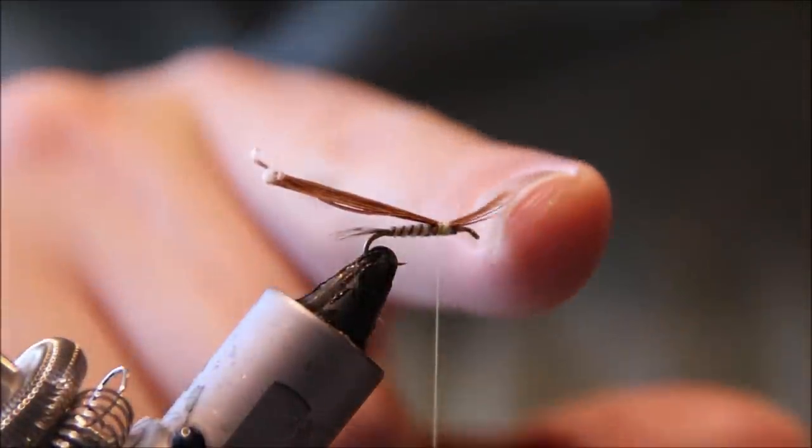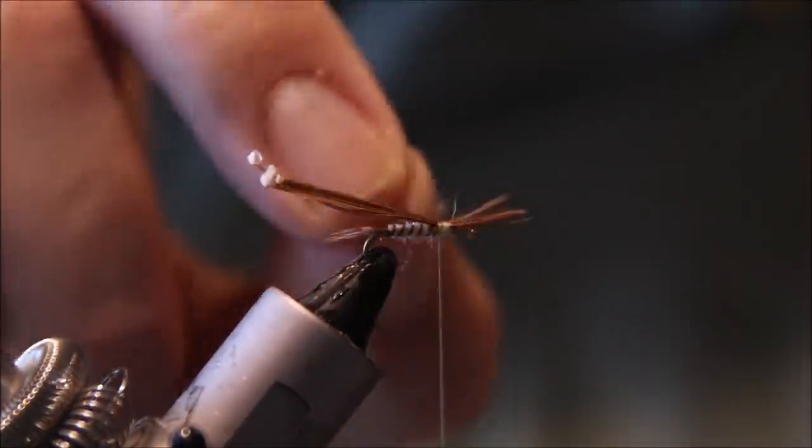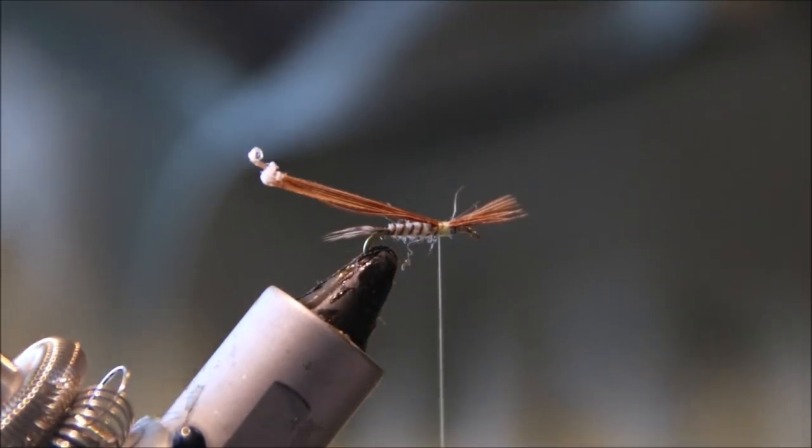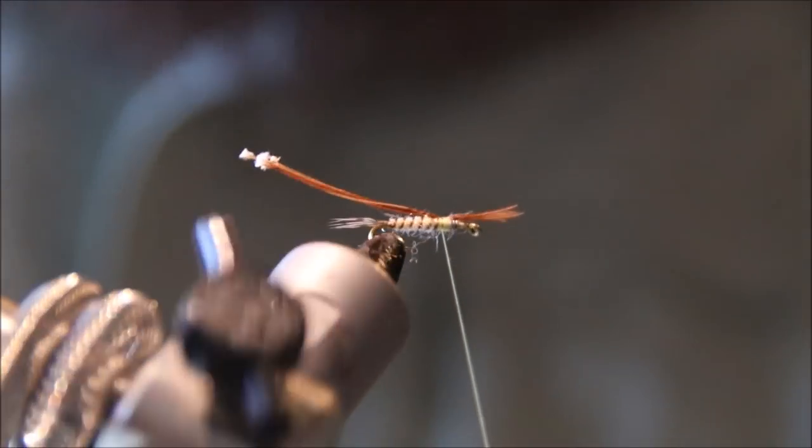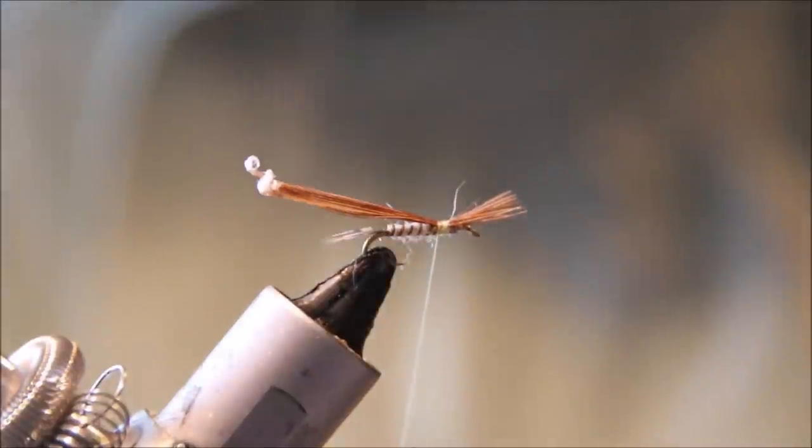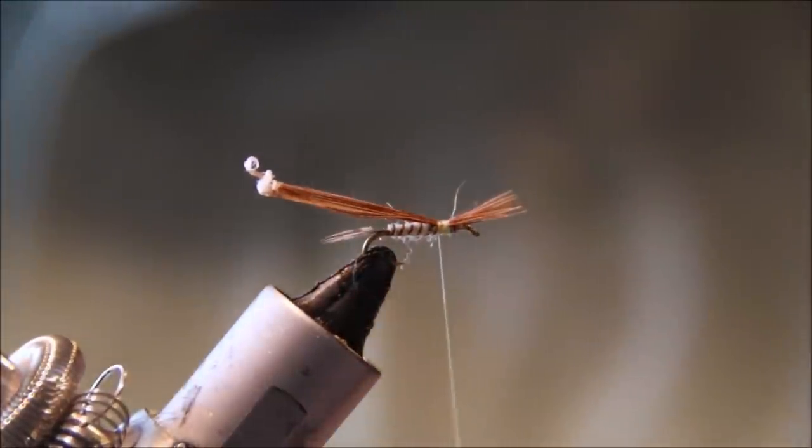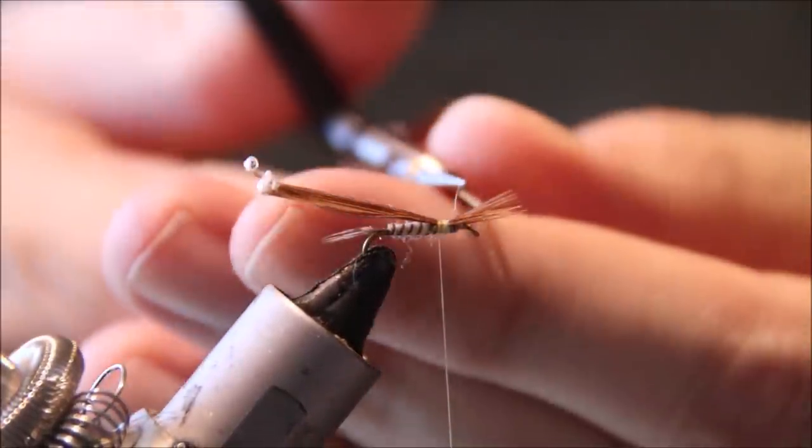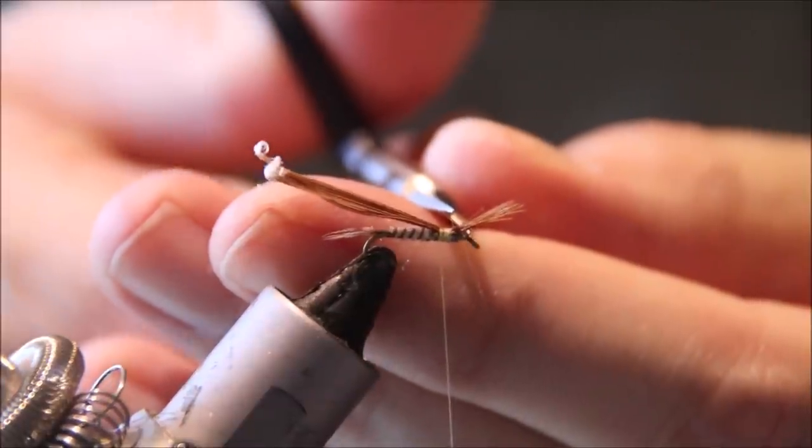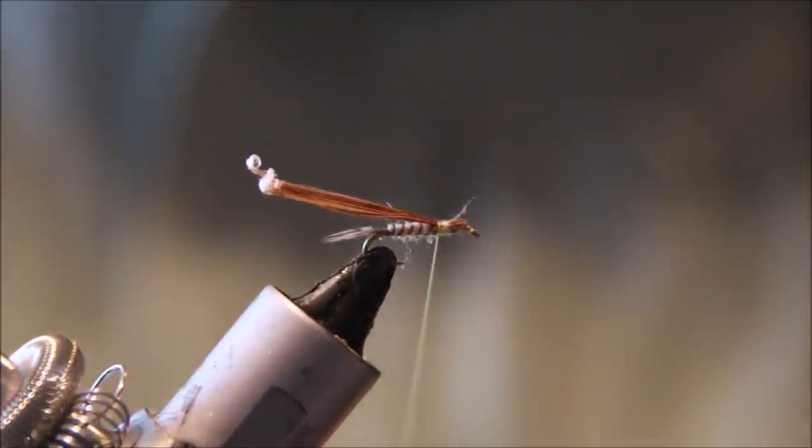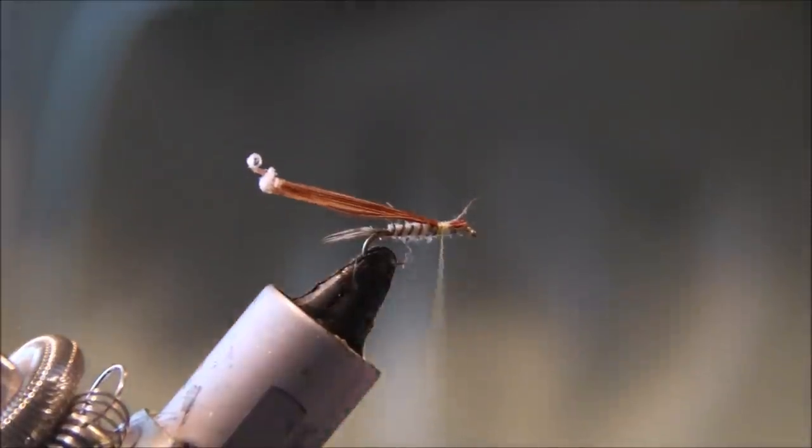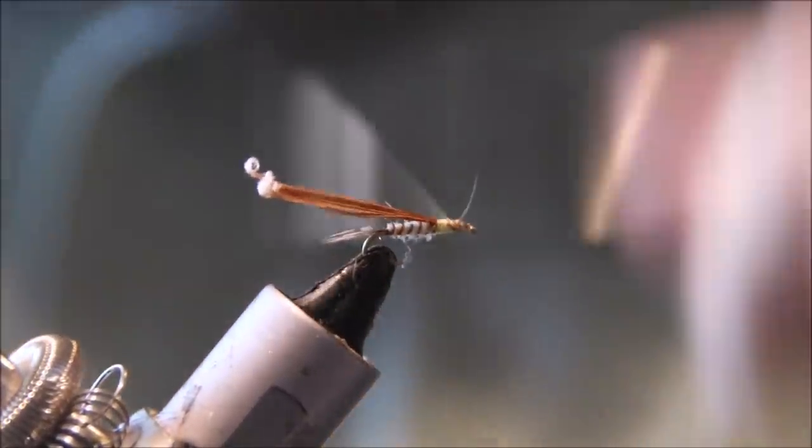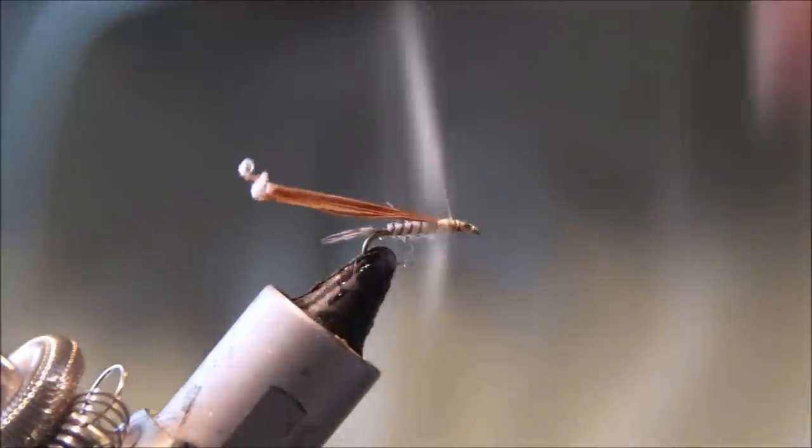You could use these pheasant tail fibers for legs - I sometimes do. Just dub the thorax, split them, and fold them back for a nice effect. But I'm going to use more of the Whiting fibers for legs, so I'll just tidy this up and dub the thorax.